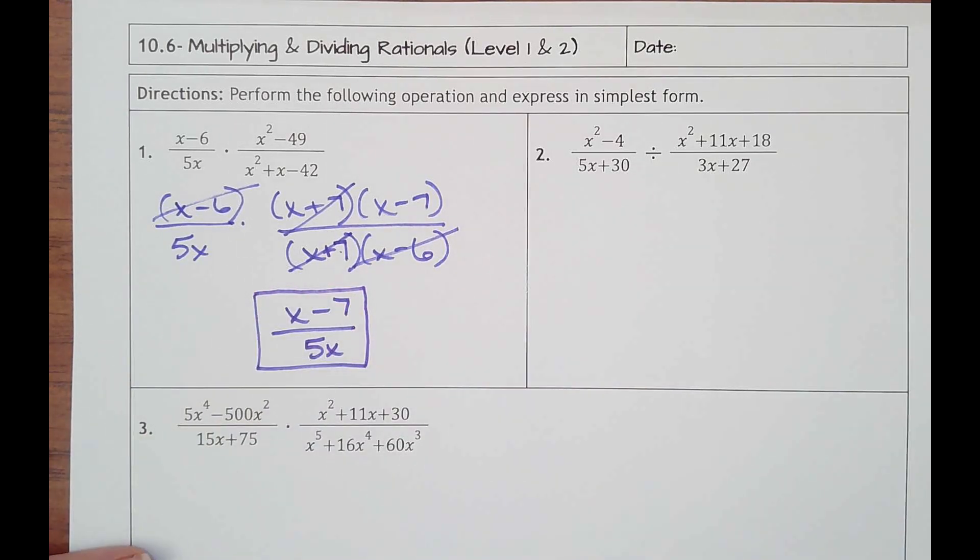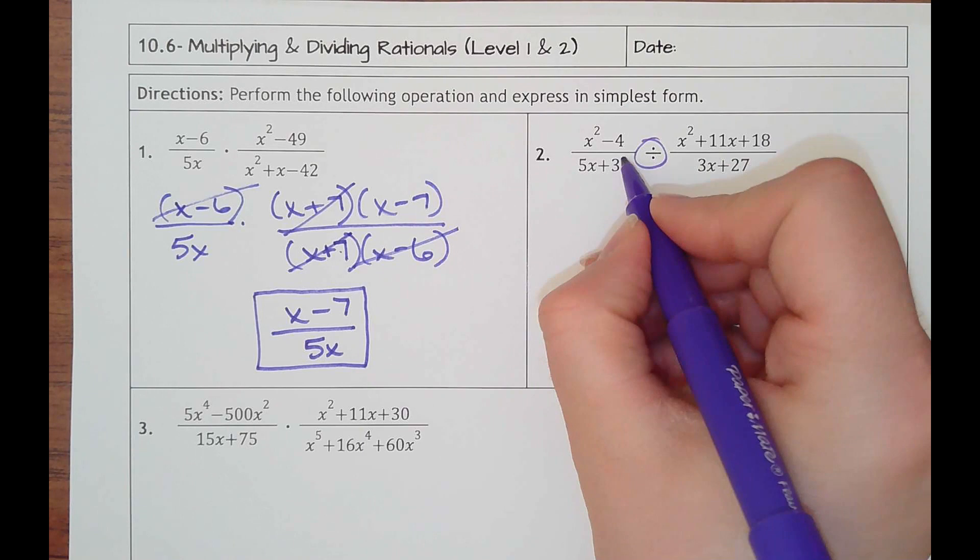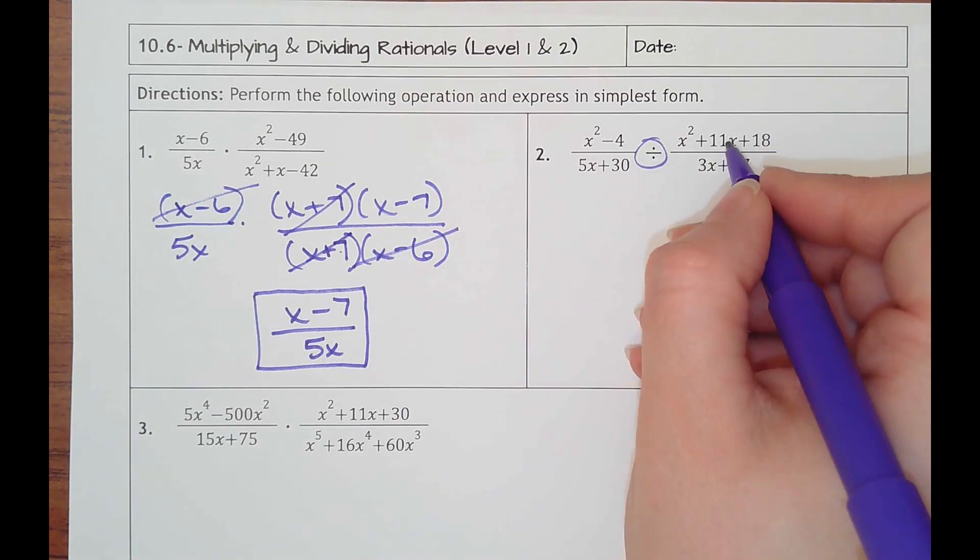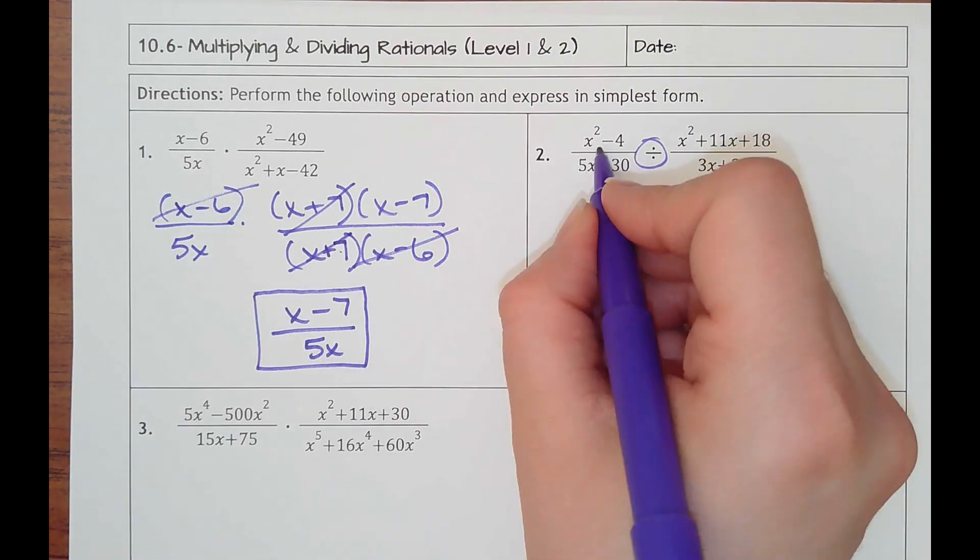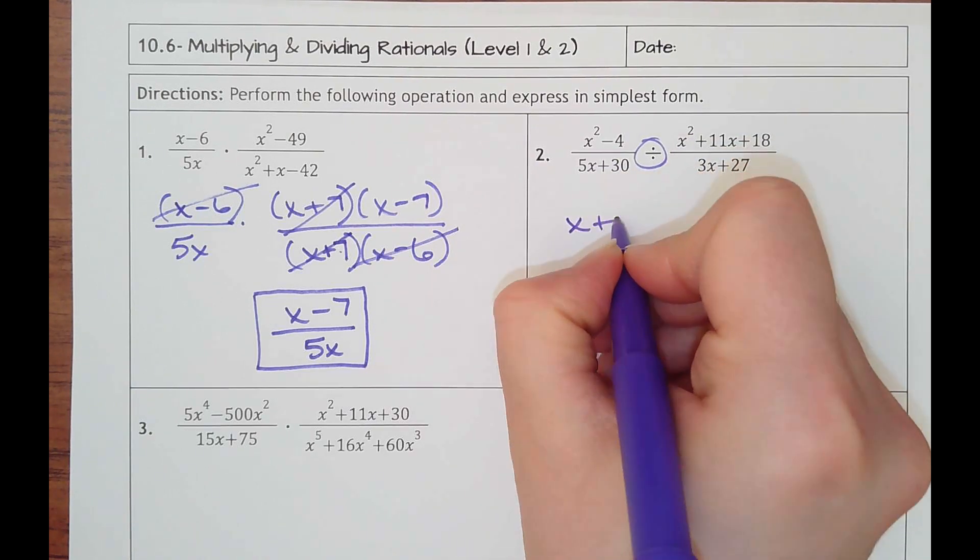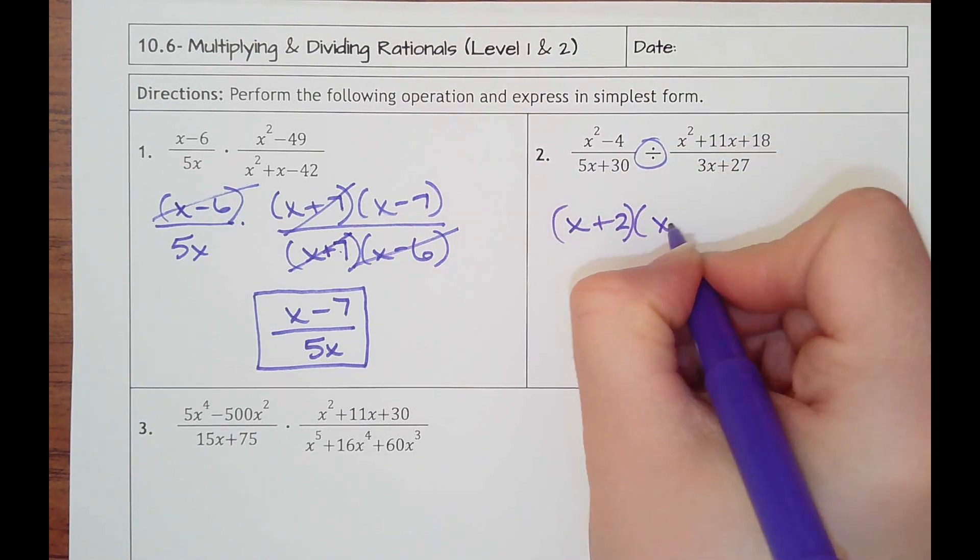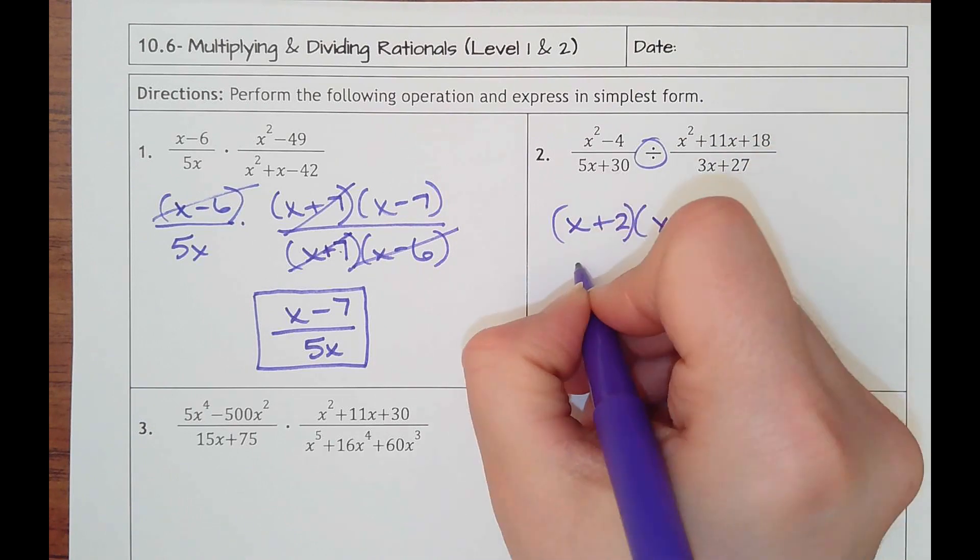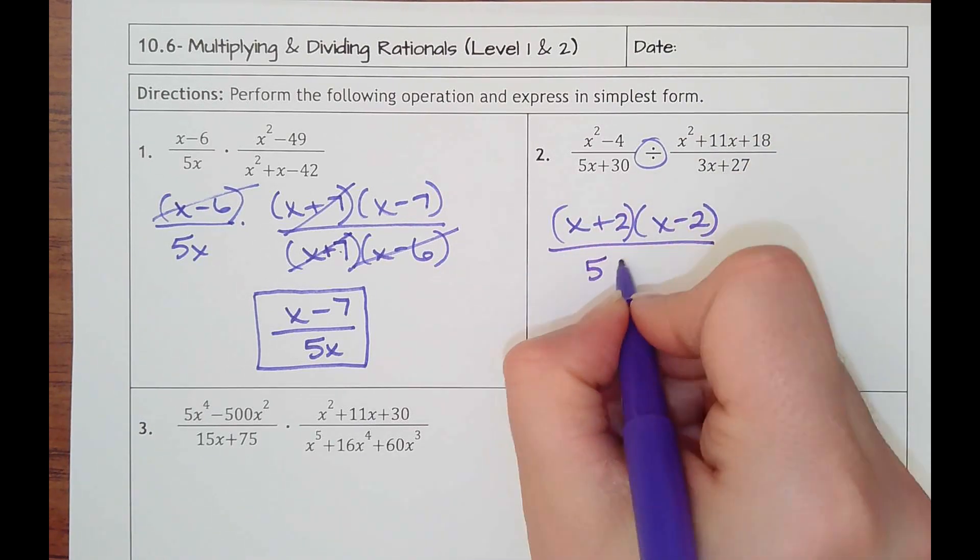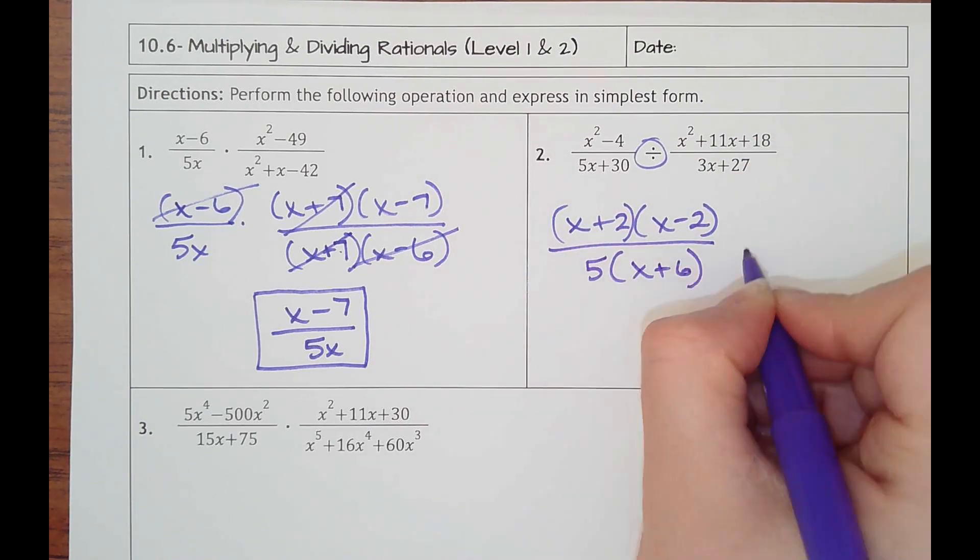Number two, be aware it's division. I'm going to factor while I'm flipping this second fraction and changing to multiplication. So this would be a difference of squares, x plus 2 times x minus 2. On the bottom I can take out a 5. I'd have times x plus 6, multiplication.